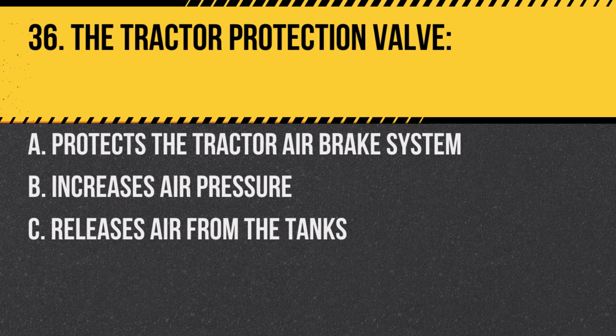Question 36. The tractor protection valve: A. Protects the tractor air brake system. B. Increases air pressure. C. Releases air from the tanks. Answer A. Protects the tractor air brake system. It prevents air loss if the trailer breaks away.